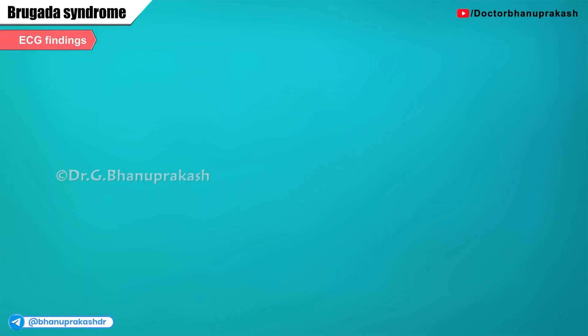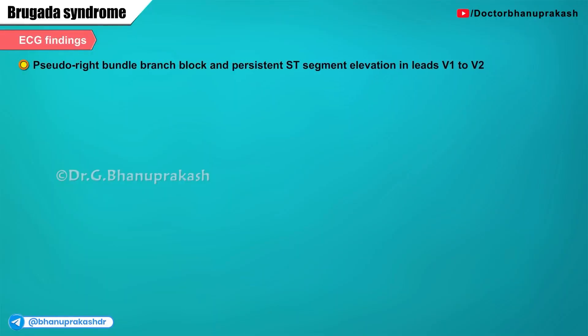ECG findings. Persons with Brugada pattern findings on a surface ECG have some form of a pseudo-right bundle branch block and persistent ST segment elevation in the leads V1 to V2.